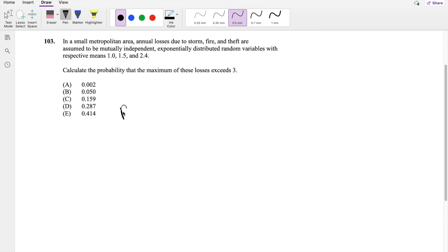They're saying calculate the probability that maximum of storm, fire, and theft loss exceeds 3. So what is this probability? Well, we know that this is also equal to 1 minus the probability that max of storm, fire, and theft is less than 3.